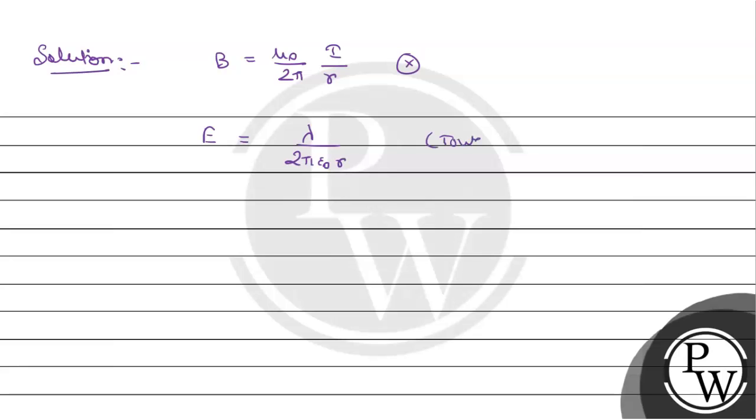यह होगा towards direction of r. जिस direction में आप r को लेने हैं. And since here B perpendicular to e है, so charge particle is in effect of both fields. तो इसका जो velocity होगा हो जाएगा जब भी कोई particle perpendicular electric or magnetic field में हो तो velocity e upon b के equal होता है.